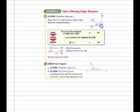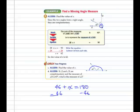We'll do the same in Example C. These two angles are supplementary because together they form a 180-degree or straight angle. So, 46 degrees plus X equals 180. We subtract 46 from both sides, and we get X on one side and 134 on the other. The measure of angle X is 134 degrees.